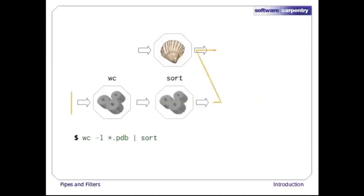Here's what happens when we run 'wc -l *.pdb | sort' instead. The shell creates two processes, one for each component of the pipe, so that wc and sort run simultaneously. The standard output of wc is fed directly to the standard input of sort. Since there's no redirection with >, sort's output goes to the screen.